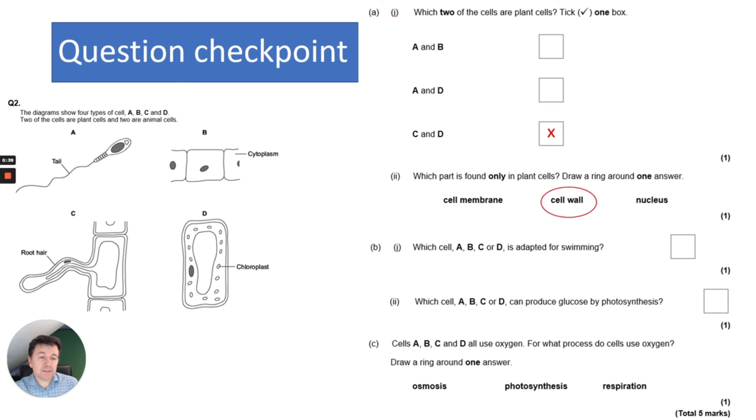Which part is found only in plant cells? We know from looking at the differences that it's cell wall. Which cell is adapted for swimming? That's A, which is sperm. Which cell can produce glucose by photosynthesis? That will be D because it contains chloroplasts. Cells all use oxygen for respiration.